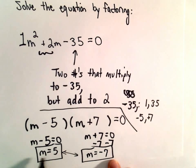So our two solutions here are m equals 5 and m equals negative 7.